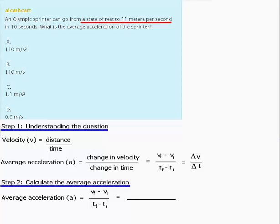So therefore, initially, at a state of rest, we know that given that velocity is distance divided by time, at rest, the Olympic sprinter could not have been moving. Therefore, the initial velocity is going to be 0 meters per second.